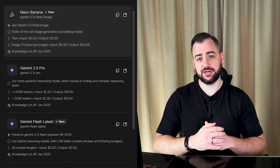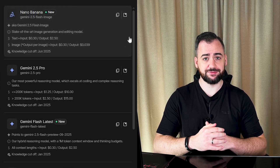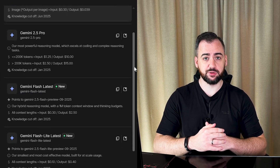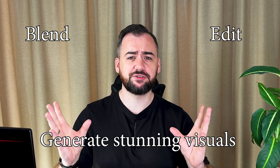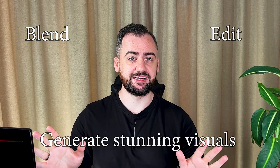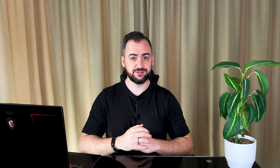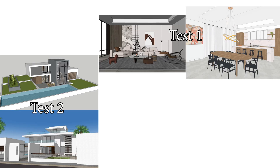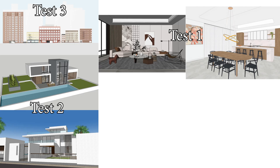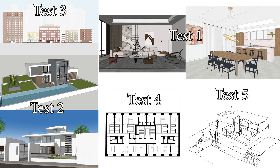This model, officially called Gemini 2.5 Flash Image, lives inside Google AI Studio. People say it can edit, blend, and generate stunning visuals from almost anything. So I wanted to see what it can do for architects and designers. I've prepared five tests, from a 3D model to render, all the way to turning a sketch into a complete visual. Let's see how far it can go.